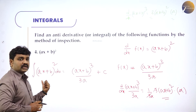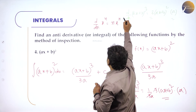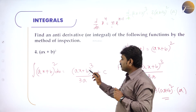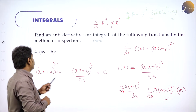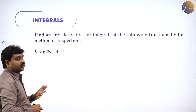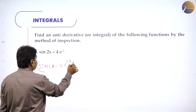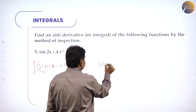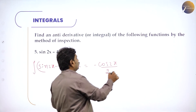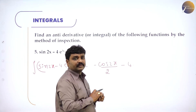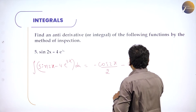The method for inspection: think of x^n — derivative of x^n is n·x^(n−1), so power decreases and the factor n appears. To reverse this: take one more power and divide by that same number so the coefficient cancels. For sin 2x: differentiate cos 2x to get minus sin 2x into 2; don't want the minus so introduce minus; don't want the 2 so divide by 2. For e^(3x): derivative is e^(3x) into 3; don't want the 3 so divide by 3, giving e^(3x) by 3 plus C by inspection.